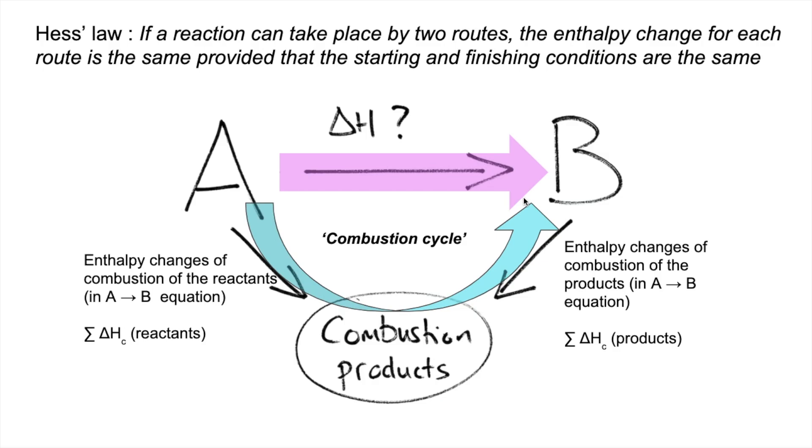You can see the arrow direction. This arrow here, the combustion of the reactants, is going in the correct direction for this blue route, but this one here is going in the wrong direction. So all we need to do is flip that round, and we do that by subtracting it from that one.